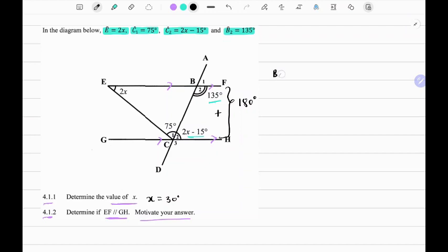So angle B2 plus C2 equals 135 degrees plus 2x minus 15 degrees. This is 135 degrees plus 2 into 30 minus 15 degrees. So this equals 135 degrees plus 60 degrees minus 15 degrees. So 135 minus 15 equals 120 degrees plus 60.